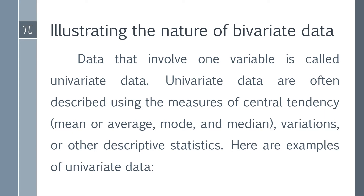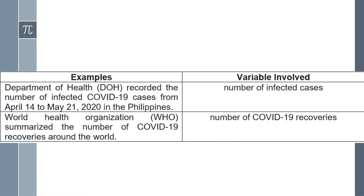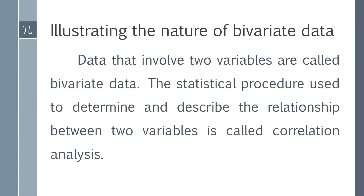Here are some examples of univariate data. The Department of Health recorded the number of infected COVID-19 cases from April 14 to May 21, 2020 in the Philippines. The variable involved here is the number of infected cases — that is an example of univariate data. Also, the World Health Organization summarized the number of COVID-19 recoveries around the world; the variable involved here is the number of COVID-19 recoveries.